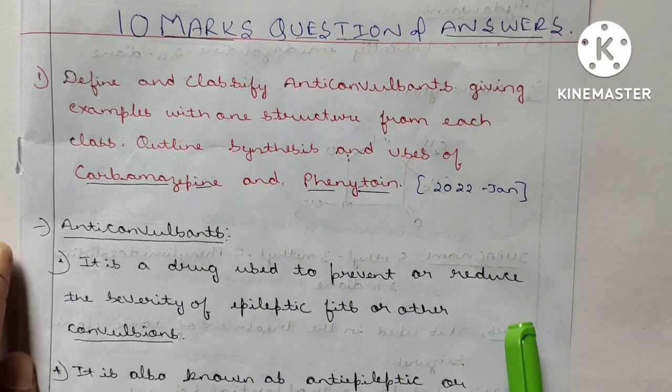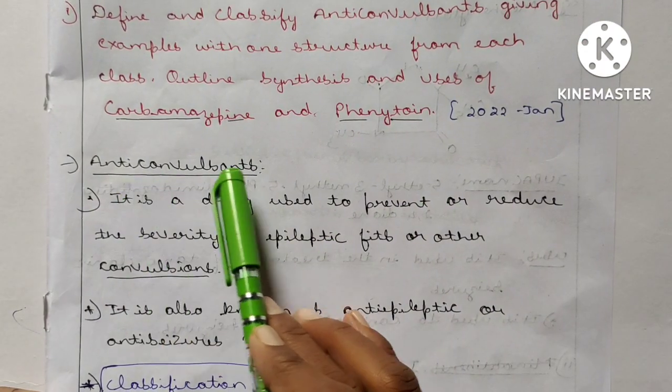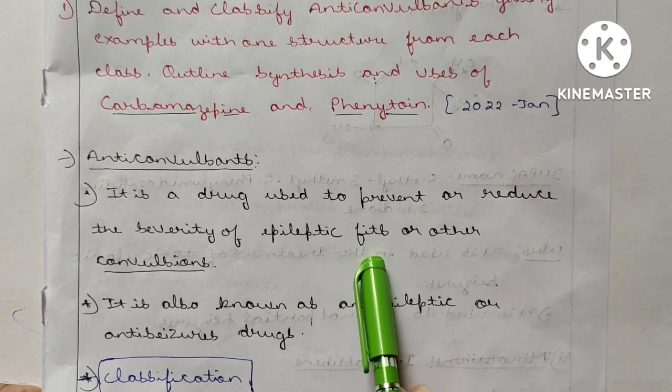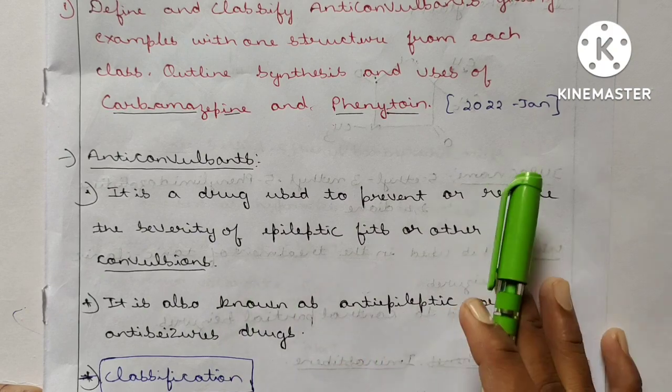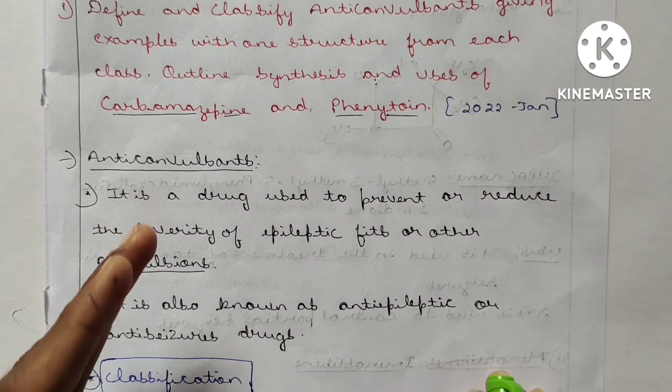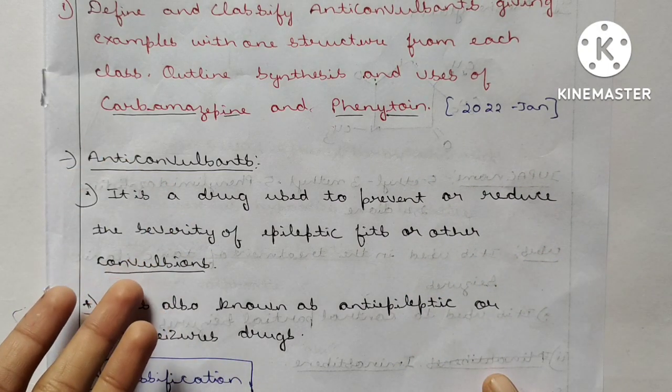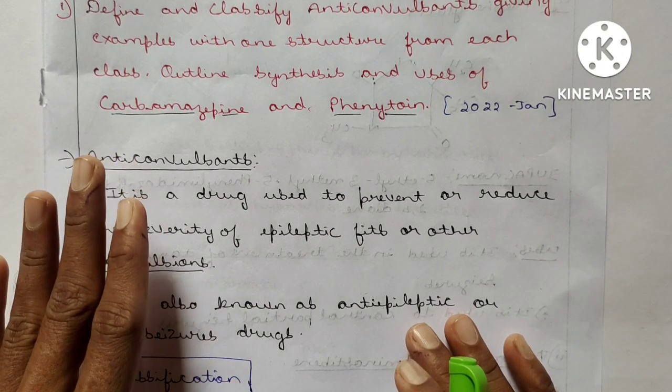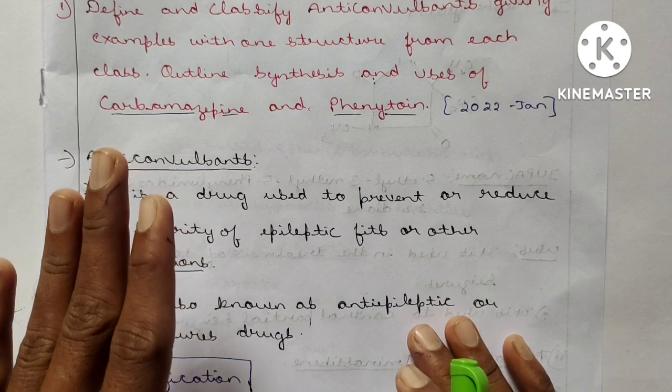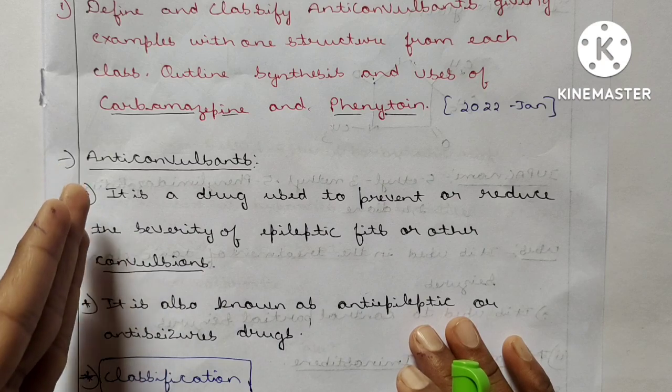First they ask what is the anticonvulsants. Anticonvulsants: it is a drug used to prevent or reduce the severity of epileptic fits or other convulsions. This is the drug which is used to prevent or to decrease the severity of epilepsy or epileptic fits or any other convulsions. Epilepsy is nothing but pits. In Hindi we are calling mirgi. It is also known as antiepileptic or antiseizure drug.